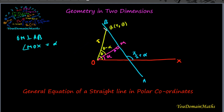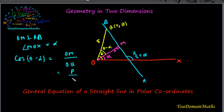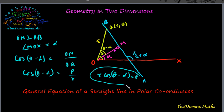So it is clear that angle QOM equal to theta minus alpha. Now from the right angle triangle QOM, cos(theta minus alpha) equals OM divided by OQ, that means p divided by r. So r·cos(theta minus alpha) equal to p. This is the equation of a straight line.